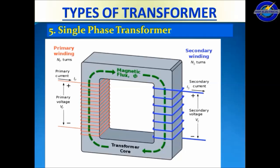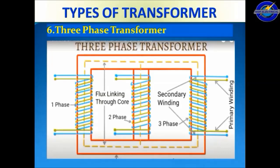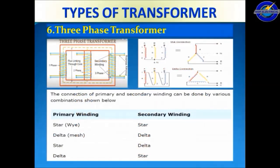This is the transformer core and magnetic flux. When we give the input voltage on the primary side, the primary winding creates a magnetic flux through the transformer core. According to Faraday's law of electromagnetic induction, the main flux direction is perpendicular to the current direction. This main flux cuts the secondary coil winding and produces the induced EMF.